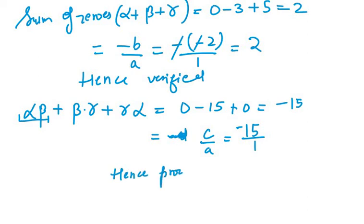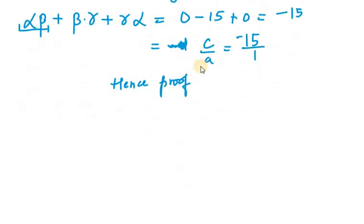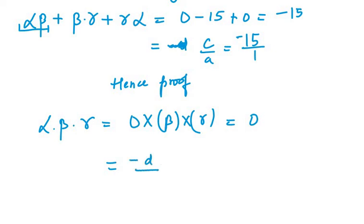Now what we need to do is we need to find the product of zeros, that is alpha dot beta dot gamma. So 0 into any number, that is beta or gamma, will be 0 only. Now the formula of coefficient is minus d over a. Now we know that there is no d in the above equation. So it will be zero and it is proved.